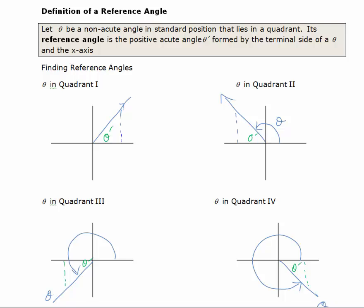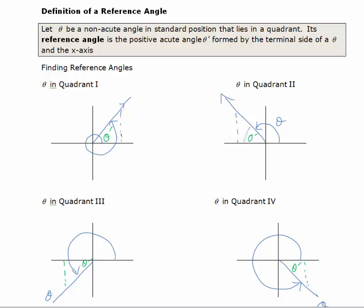If you have an angle that ends in the first quadrant, that reference angle is the acute angle you make with the x-axis. If your angle falls in the second quadrant, you drop a perpendicular. Theta star is that acute angle formed between the x-axis and your terminal side.